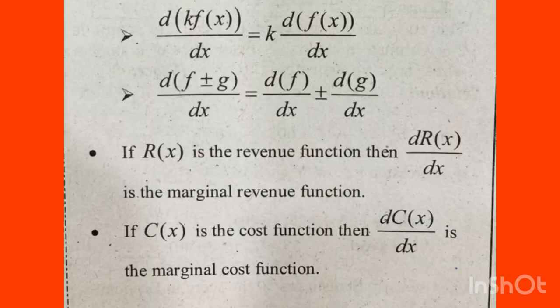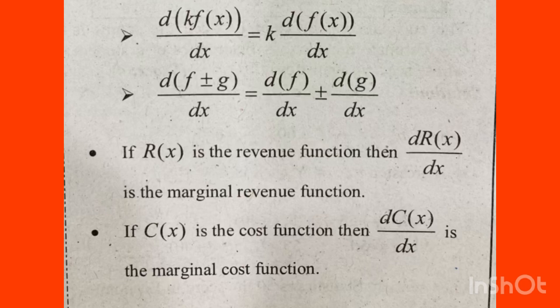d of k·f(x) divided by dx is equal to k times d of f(x) divided by dx. Also, d of (f ± g) divided by dx is equal to d of f divided by dx plus or minus d of g divided by dx. If r(x) is a revenue function, then dr(x) divided by dx is the marginal revenue function.